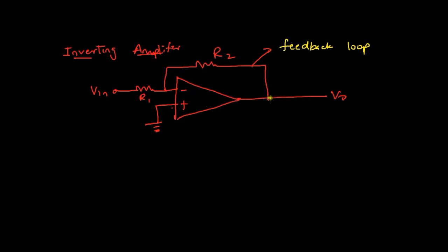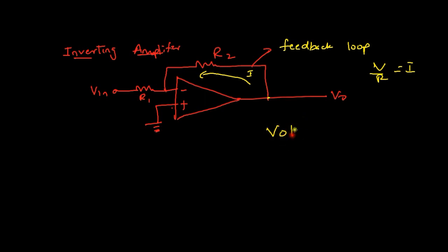What happens is this output, which is in volts — V divided by R will give us I — so there is something called current I. We are applying current to the input terminal. As I said earlier, we always apply voltage in series.